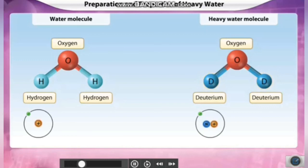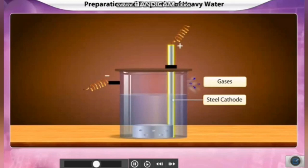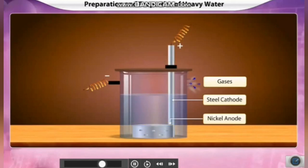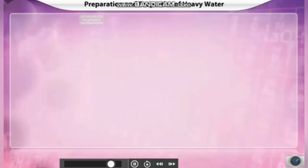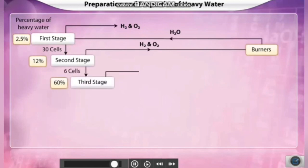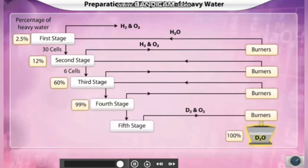In an ordinary water molecule we have two hydrogen atoms, and in a heavy water molecule we have two deuterium atoms, which is a heavy isotope of hydrogen — that is the difference between water and heavy water. This water molecule is used for the preparation of heavy water when it undergoes prolonged electrolysis. The setup uses a steel cathode and a nickel anode. The electrolyte is a 3% concentration solution of sodium hydroxide, which on electrolysis produces heavy water through different stages. You just need to know that at the sixth stage you get pure heavy water.